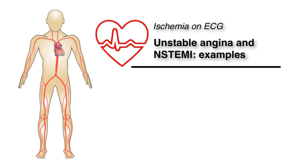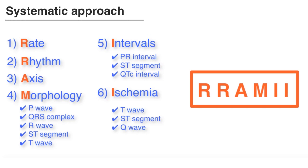Now let's go over a few examples of unstable angina or NSTEMI on EKG. I'll approach each EKG systematically in order for you to develop the habit of always analyzing each EKG in the same manner in order not to miss anything. If you'd like, you may pause the EKG before we go through it together and try to work it out yourself. Here is a reminder of the systematic approach to the EKG — always use these steps to properly approach each EKG and avoid missing important information.